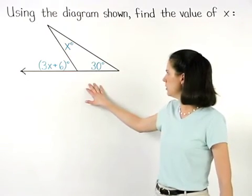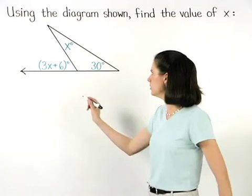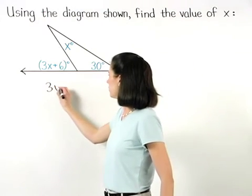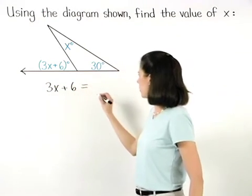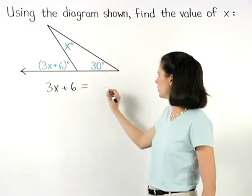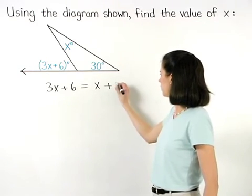So in the diagram shown, the exterior angle, 3x plus 6, equals the sum of the remote interior angles, x plus 30.